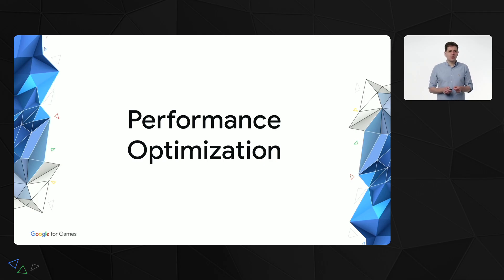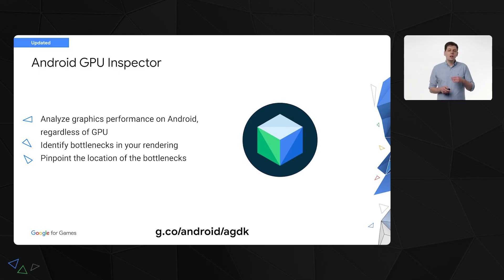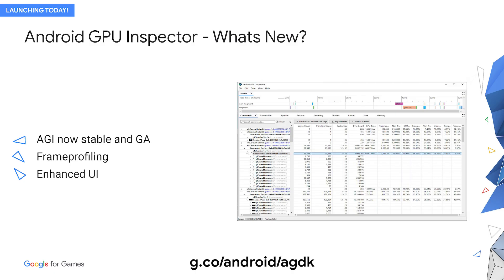Performance optimization is the third focus of the Android Game Development Kit. Our suite is designed to help developers quickly find any stability or performance issues before launch and to monitor performance post-launch to catch any issues. We started with the most important metrics like frame rate, loading time, and memory, and we'll be expanding to new metrics over time. The Android GPU Inspector is our tool to help you analyze graphics performance, regardless of what type of GPU you're running on. It helps you identify bottlenecks in your rendering — whether in the GPU or elsewhere — and pinpoint the location of these bottlenecks in your render passes. Last year we shared the AGI beta with you, and having incorporated your feedback, we're proud to announce that AGI is fully launching today.